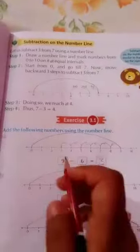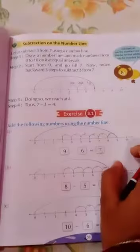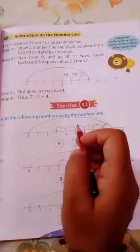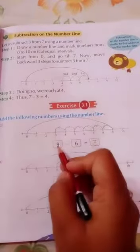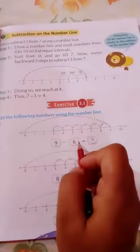Now, the question asks to subtract the following numbers using the number line. Now, what do we have to do? Question is 9 minus 6. Now in 9, we have to do minus 6.